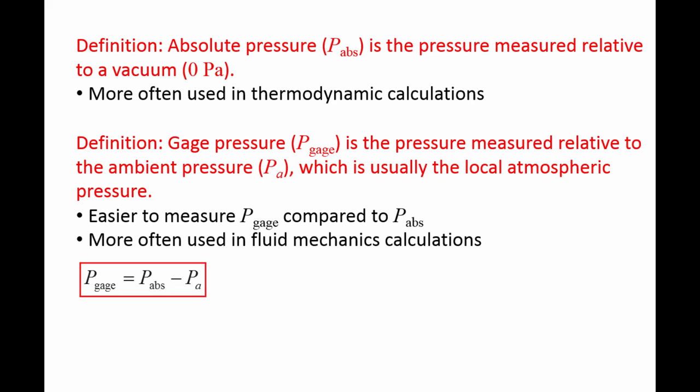The equation relating absolute pressure and gauge pressure is P gauge equals P absolute minus P ambient.